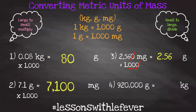Number four: 920,000 grams equals how many kilograms? Since I'm going from small to large, I divide by 1,000. Look at all those lovely zeros — a perfect opportunity to cancel them out. I can cancel three zeros from each number, from my divisor and my dividend. That leaves me with 920 divided by 1, which is simply 920 kilograms.